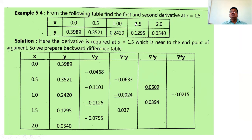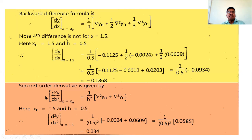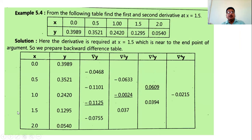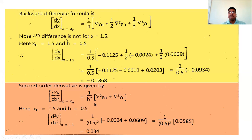For the second order derivative at x = 1.5, write the formula: d²y/dx² = (1/h²)[∇²yₙ + ∇³yₙ]. No further terms since ∇⁴y and higher are zero. With x = 1.5, h = 0.5, substitute ∇²yₙ and ∇³yₙ from the table. The answer is 0.234 for the second order derivative at x = 1.5.